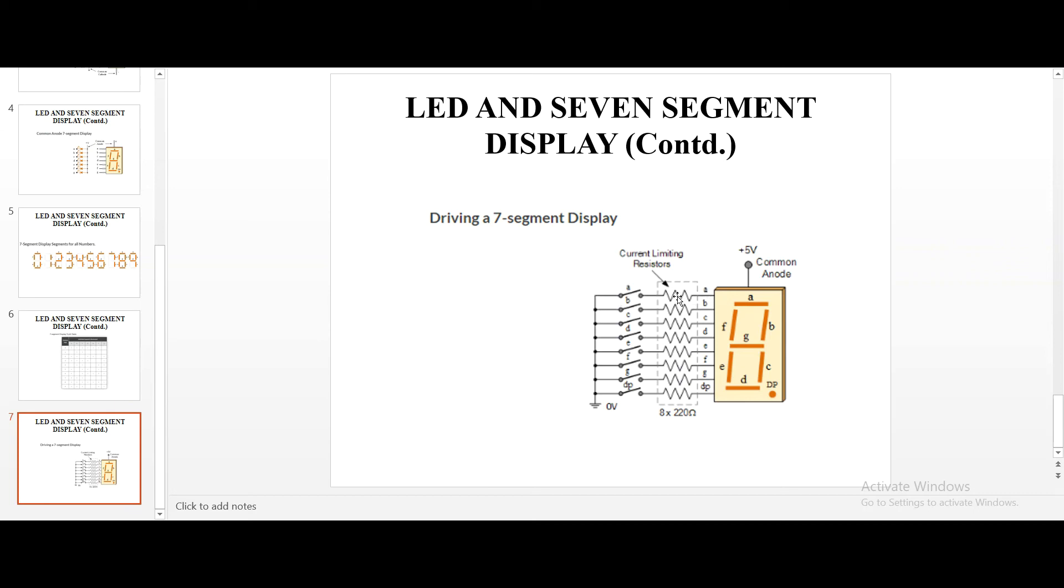5V is obtained. This resistor is there to protect this LED. This LED has to be protected because more than voltage, a current could damage any particular segment or any particular component. Because the current flows through any device or component. But the voltage flows across.